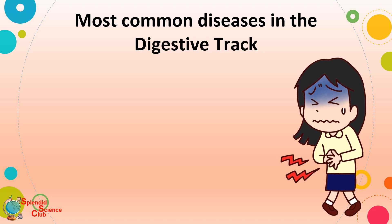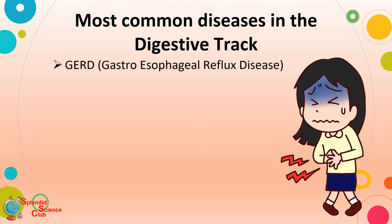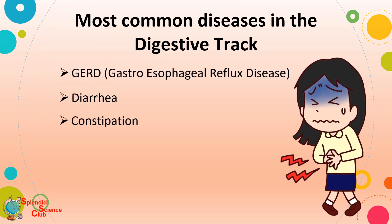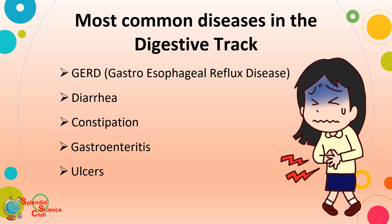If you are not careful enough to maintain a healthy food pattern, you will face many problems related to organs in the digestive system. The most common diseases in the digestive tract include: gastroesophageal reflux disease, diarrhea, constipation, gastroenteritis, ulcers, and hemorrhoids.